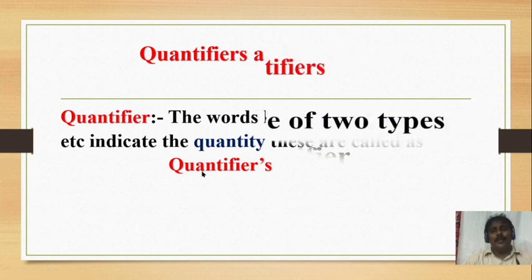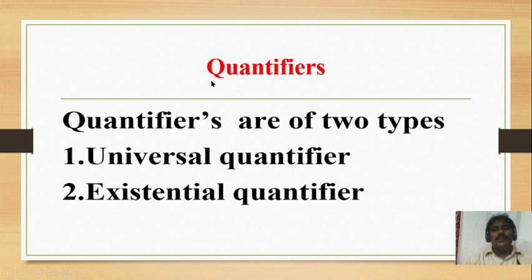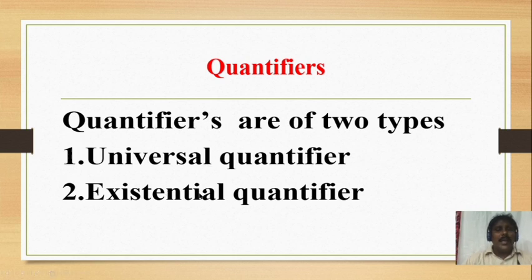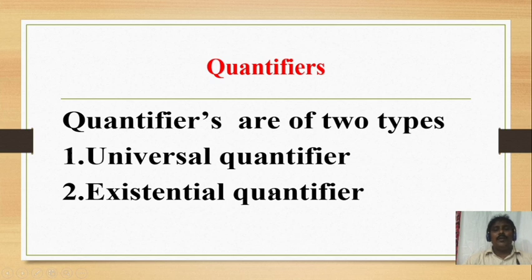Quantifiers are divided into two types: number one is universal quantifier and number two is existential quantifier. Universal means 'for all' — 'for all' is called the universal quantifier. 'There exists' is called the existential quantifier.